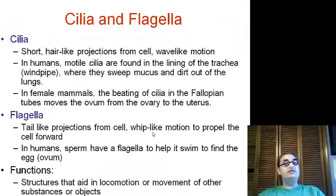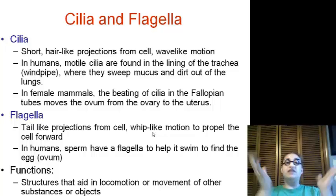Now, we have cilia and flagella. Cilia are short hair-like projections from the cell, and they do a wave-like motion. We have these in our lining of our trachea, or our windpipe, and it sweeps mucus and dirt out of our lungs. And in females, yes, the females out there, you have cilia lining your fallopian tubes, and they move the egg every month from your ovaries to the uterus.